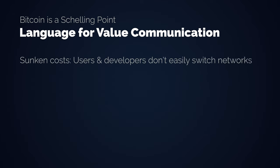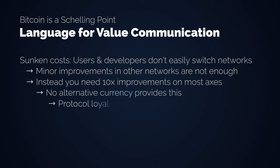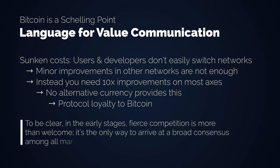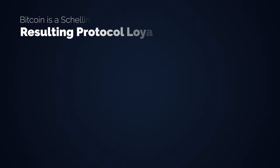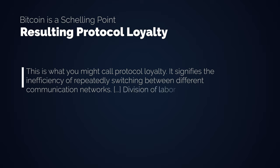Users and developers don't easily switch networks due to sunk costs in the previous network. Minor improvements in other networks won't cut it — you would need a 10x improvement on not just one but most axes, which is something we just don't have in the thousands of alternative cryptocurrencies. It is very hard to create a protocol significantly better than Bitcoin on all axes. Having several competing protocols in the long run leads to inefficiency in communication: if you use protocol A and I use protocol B, we cannot communicate with each other. This is protocol loyalty — it signifies the inefficiency of repeatedly switching between different communication networks. Division of labor cannot express itself to its fullest in a fragmented society.